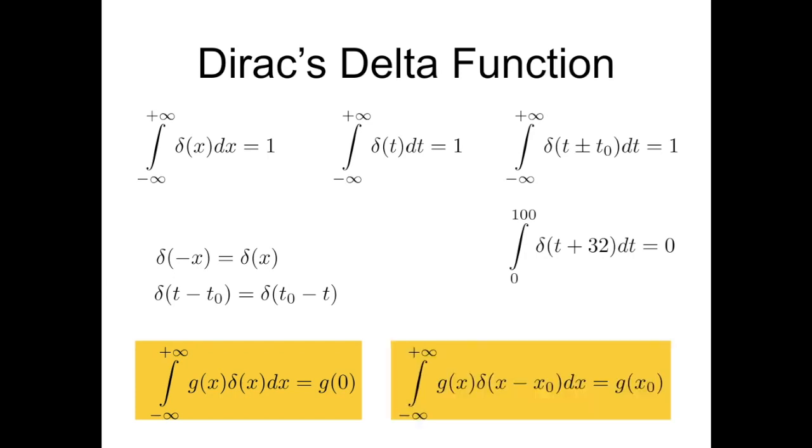By extension, if the Dirac delta function is centered in another point, say x equals x0, then this integral of the product makes surviving only the value of the function g corresponding to the point where the Dirac delta is centered.